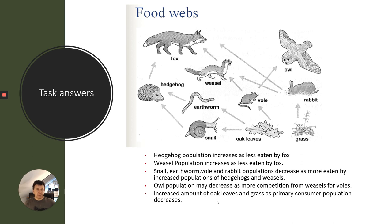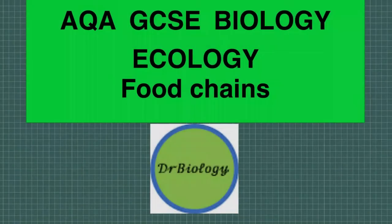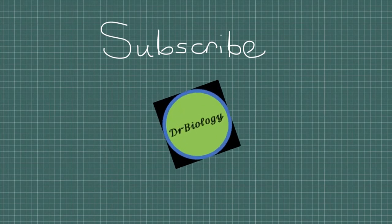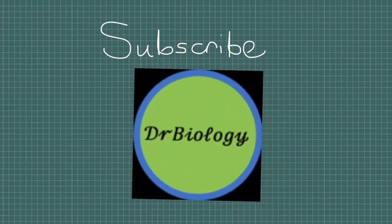There's also an increased amount of producers as primary consumer populations decrease. So there are lots of different knock-on effects — that gives you an idea of the type of exam question they could ask related to this topic. That covers food chains and feeding relationships. I hope you found that video useful; please subscribe if you haven't already, and there'll be more videos coming soon.